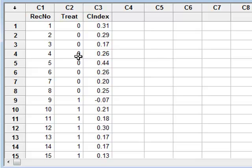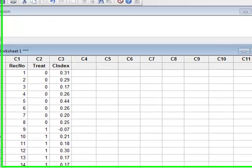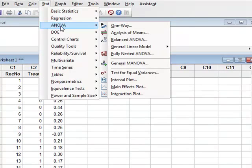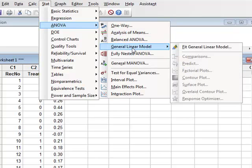However, to test those conditions, the best way of doing it is to run the ANOVA calculation, which we do from STAT, ANOVA, general linear model, and we will fit the general linear model.